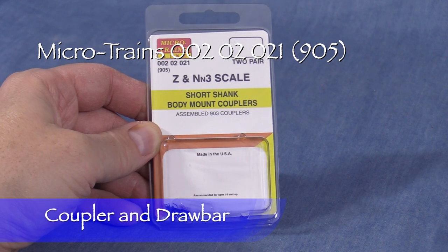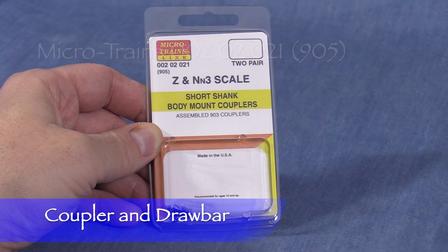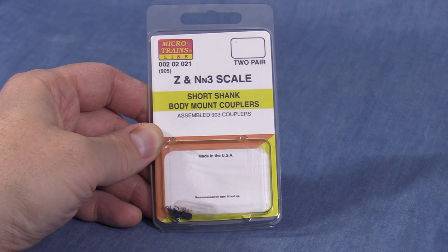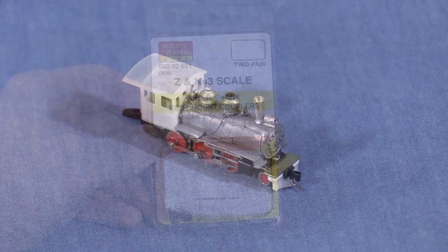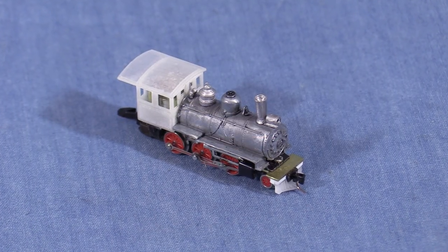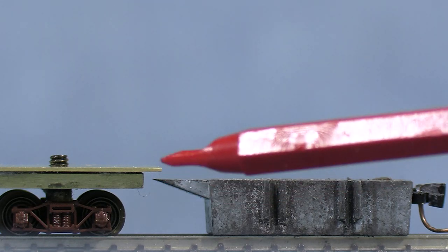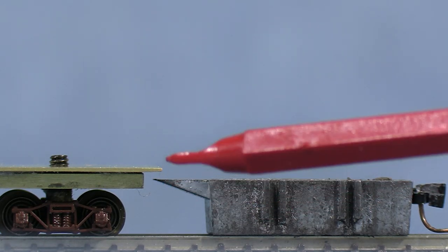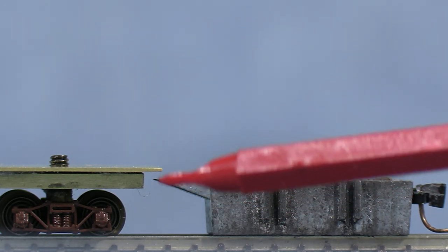Locomotives aren't much use if they can't pull anything, so having a coupler on the tender is essential. I'll be using a Microtrains 905 Z-scale coupler on the tender. It's the same kind I used on the locomotive pilot. The projection on the back of the Microtrains height gauge shows where the coupler mounting pad needs to be in order for the coupler height to be correct.